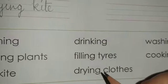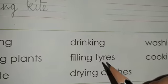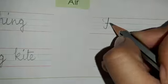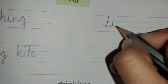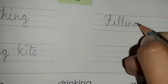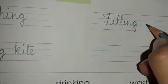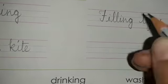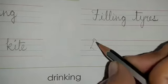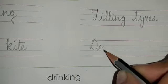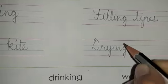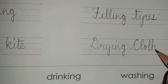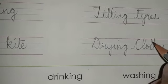Next, what else? Filling tires and drying clothes. So let's write filling tires, and after that, write down drying clothes — D-R-Y-I-N-G, clothes.